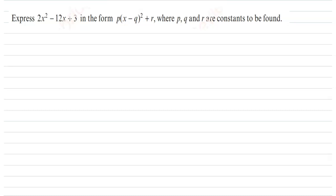Here we are going to solve the problem: express 2x² - 12x + 3 in the form p(x - q)² + r, where p, q and r are constants to be found.